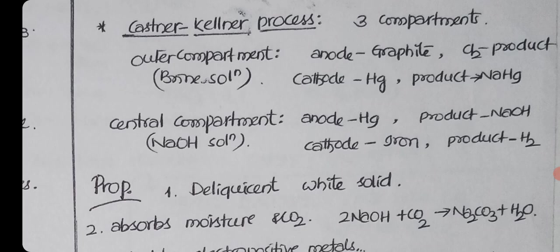So here at anode the product is NaOH. At cathode, the cathode is iron. At cathode hydrogen gas is released. At anode chlorine, at cathode hydrogen, in the cell you are getting sodium hydroxide.